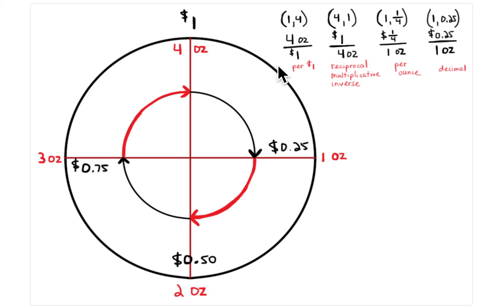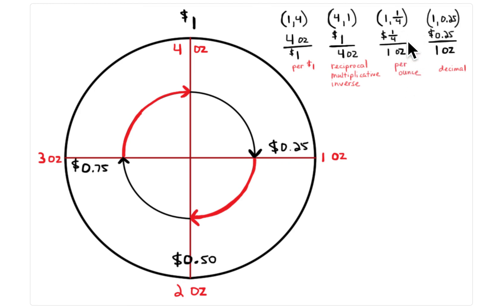The way to set this up is to look at the constant of proportionality that's greater than one first — in this case, four ounces per one dollar. Make the whole circle equal to that one dollar, and divide it into four parts. When you look at the constant of proportionality that's less than one — one fourth — you know it will be parts of the circle: four parts, because it's one fourth. The more you practice drawing this diagram, the more these kinds of problems will make sense.